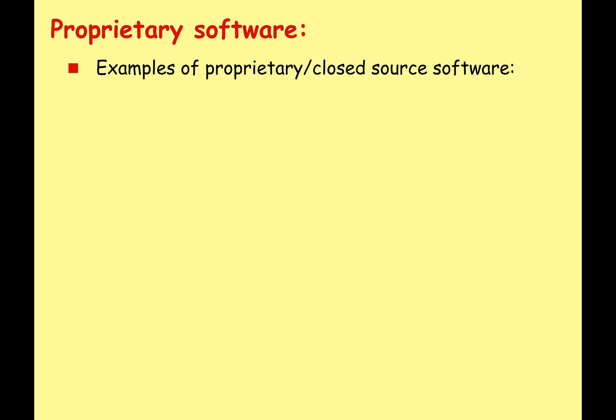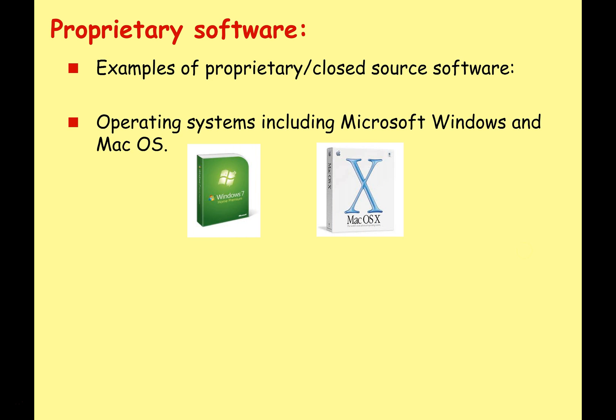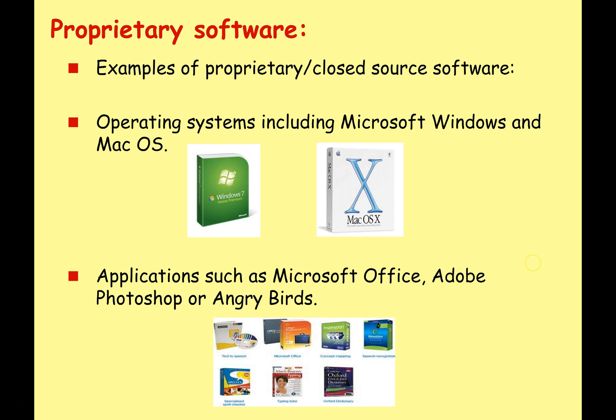Let's take a look at some examples of proprietary or closed source software. Microsoft Windows and Mac OS are closed source — you can run them but you can't look under the hood and see what's happening. A lot of the big famous application software you'll use — Microsoft Office, Adobe Photoshop, most games like Angry Birds — these are all proprietary software.